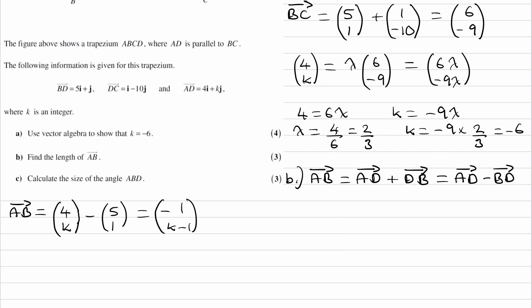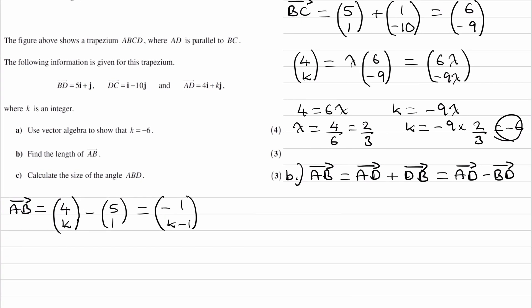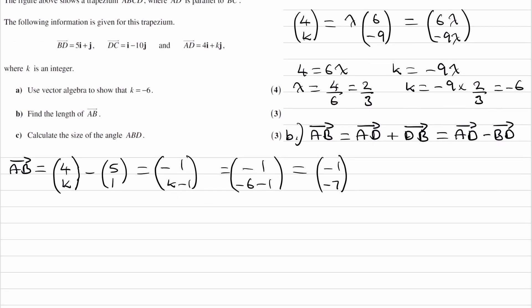This then gives minus 1 and then K minus 1. And then remember that K is equal to minus 6. That's what we had earlier. So then this is then equal to minus 1, minus 6 minus 1, which is then minus 1, minus 7. So now we have the vector AB. And to find the magnitude of AB, we just have to square each of the components, add them up, and square root the result. So this will be root 50 or simplified, 5 root 2.